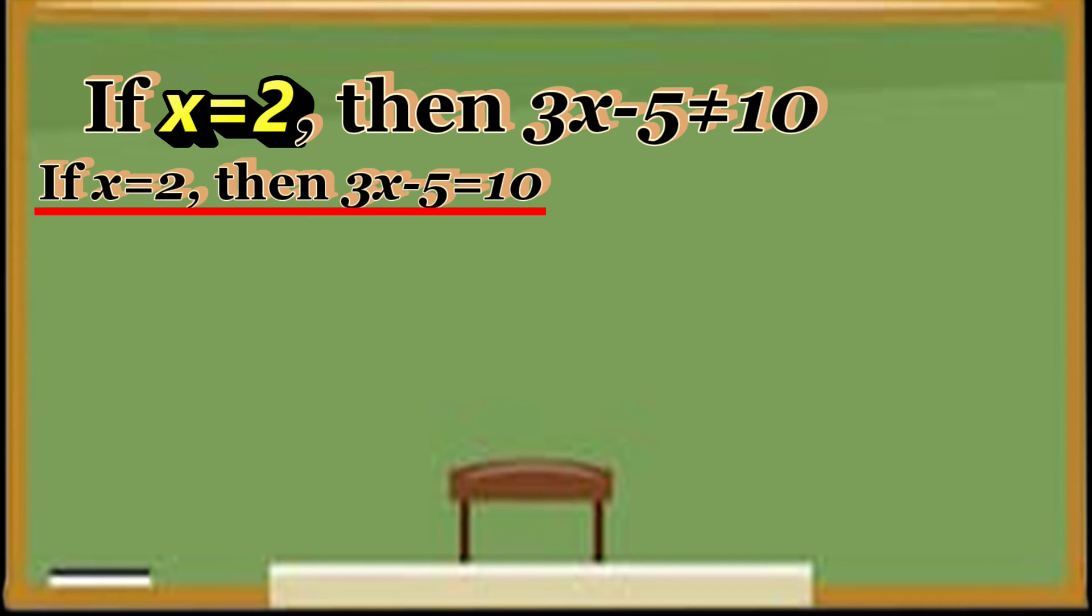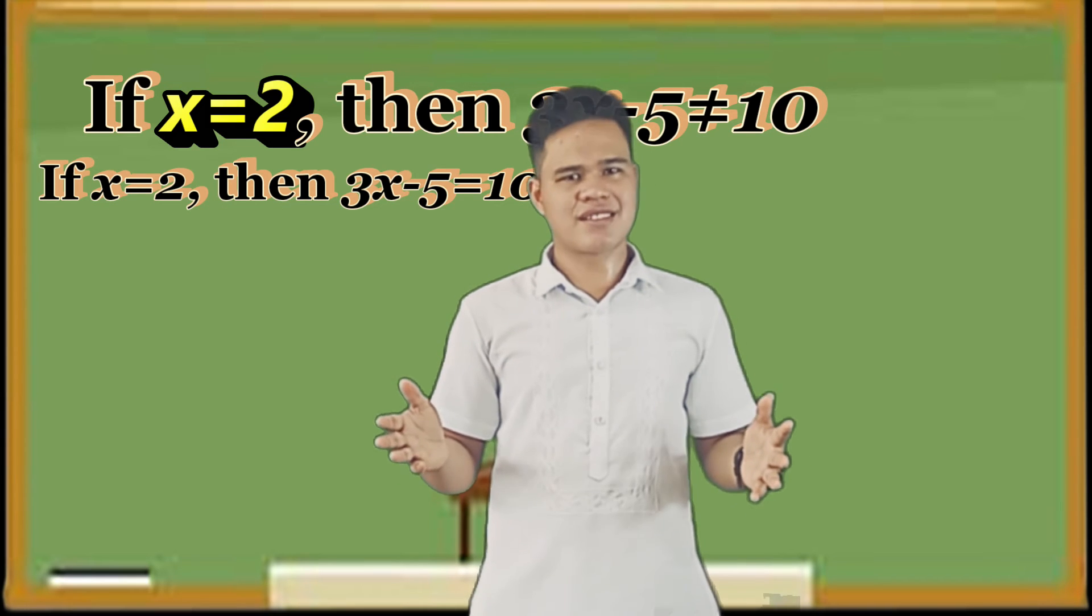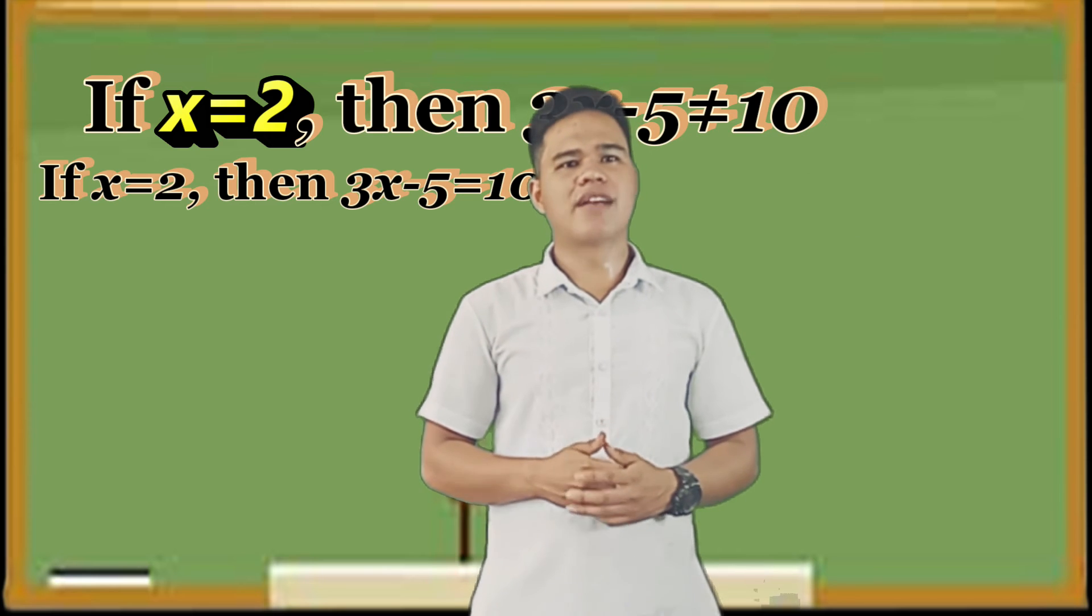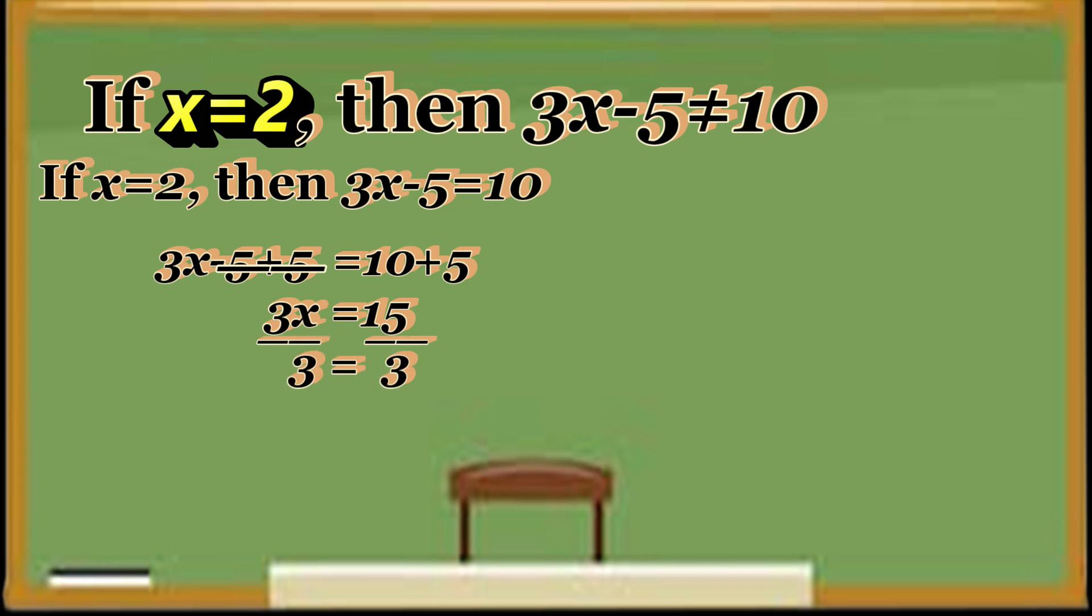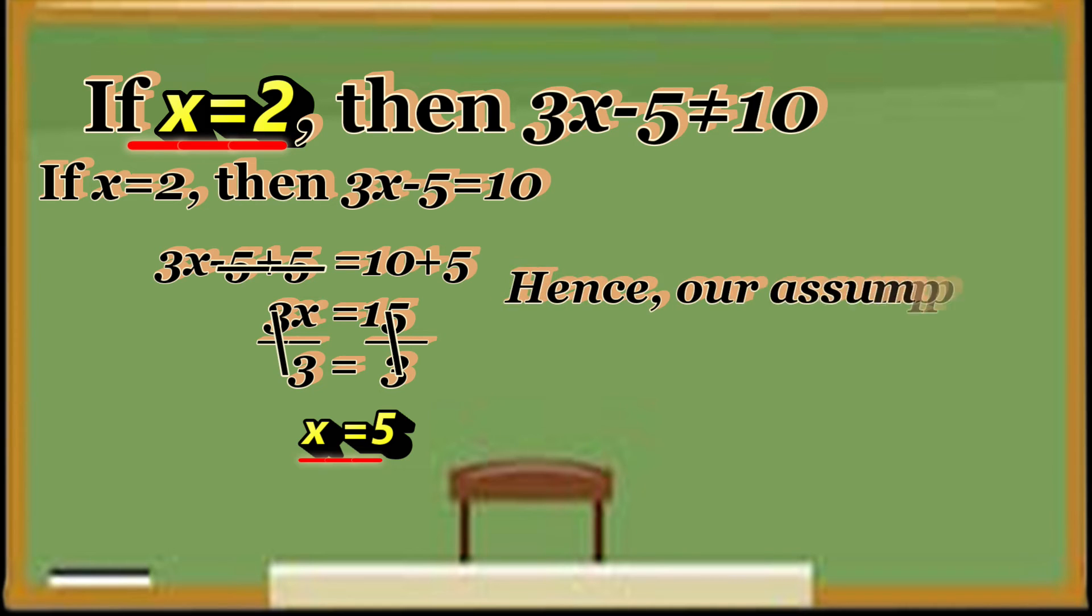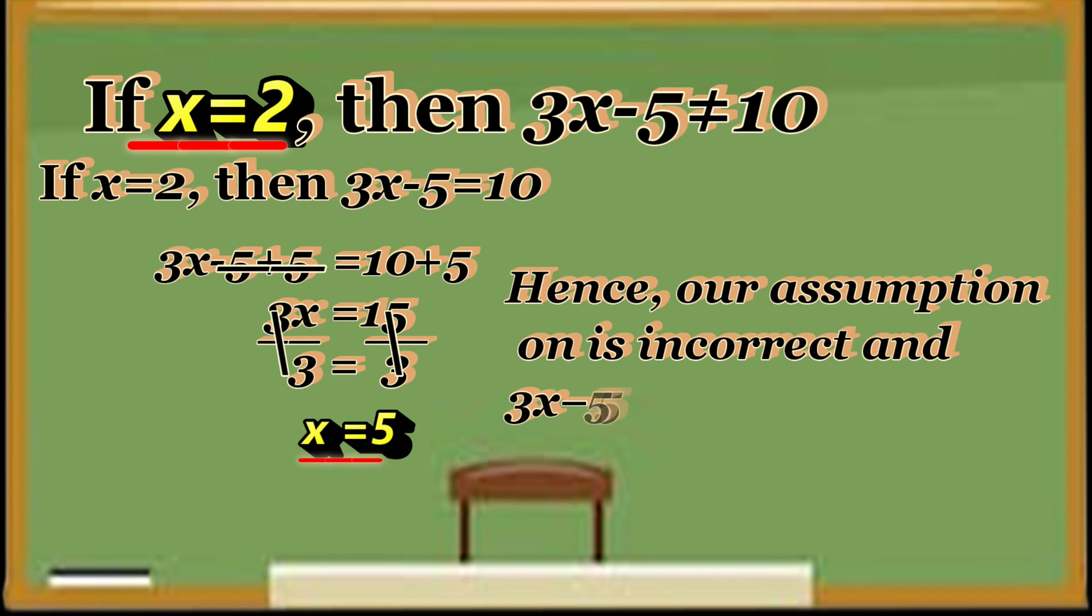If we take this statement as true and solve for X: 3X minus 5 equals 10. By addition property, that becomes 3X equals 15. By division property, that becomes X equals 5. So this contradicts the given statement that X equals 2. Hence, our assumption is incorrect and 3X minus 5 does not equal 10.